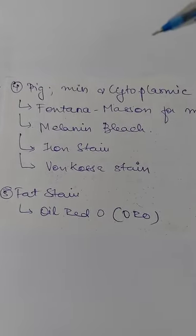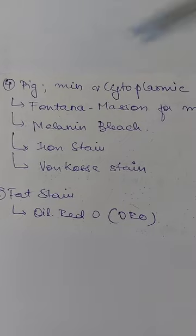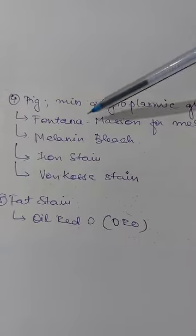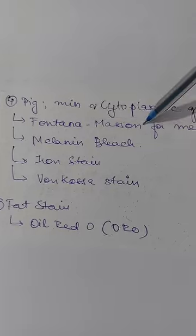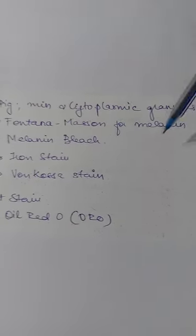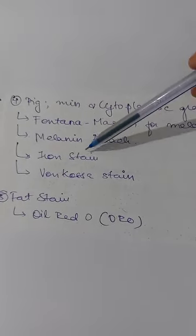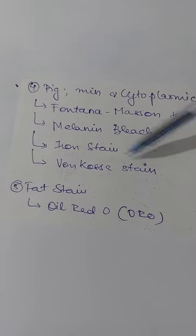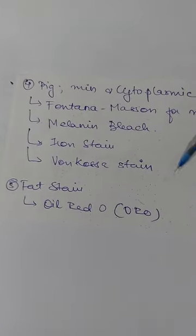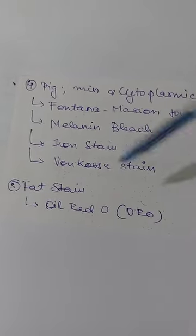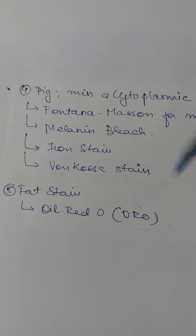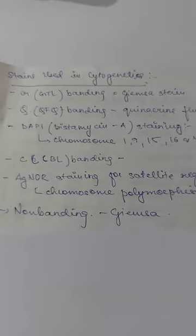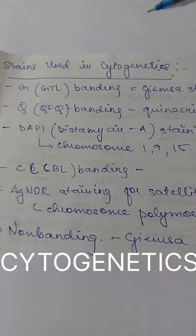Stains that color carbohydrates include colloidal iron, Alcian blue, PAS, and mucicarmin. For pigments, minerals, and cytoplasmic granules: Fontana-Masson stain is used for melanin, melanin bleach, iron stain, and von Kossa stain. Fats are stained by Oil Red O. These cover the main special stain categories.